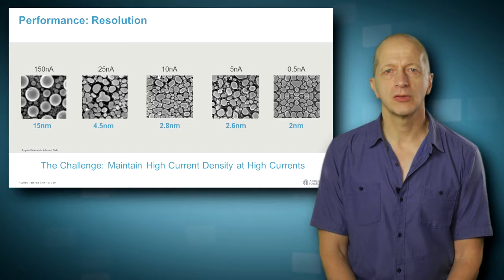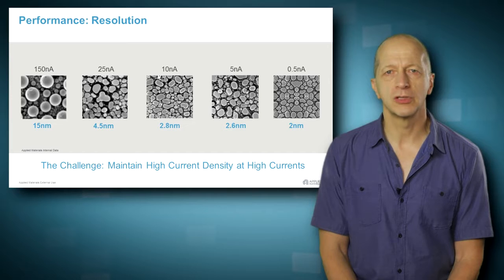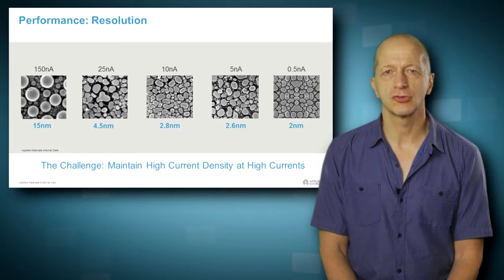The higher the current density is in the e-beam probe, the lower the signal noise in the image so the shorter the image acquisition time can be.